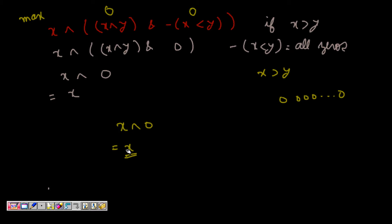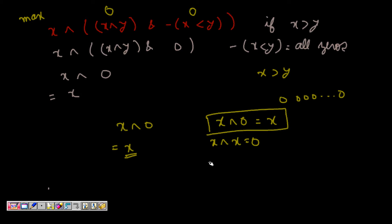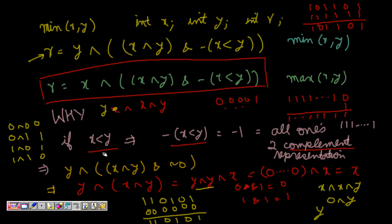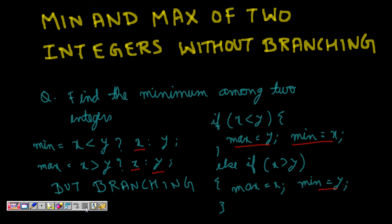A few important properties to remember: x XOR 0 equals x itself, and x XOR x equals zero. Also, -1 can be represented as all ones in two's complement. These are the key properties we used. This is how you can find minimum and maximum without branching using bit manipulation.